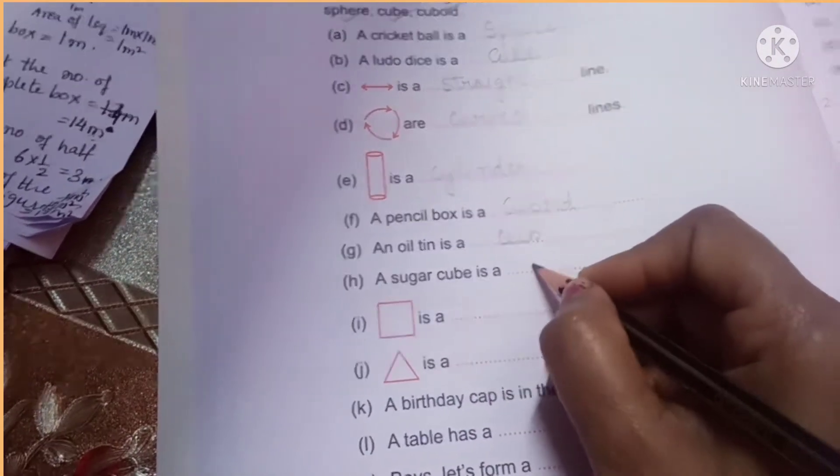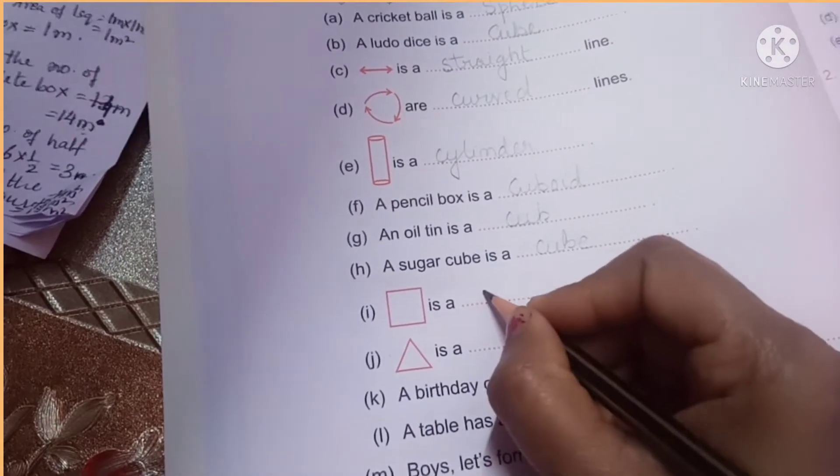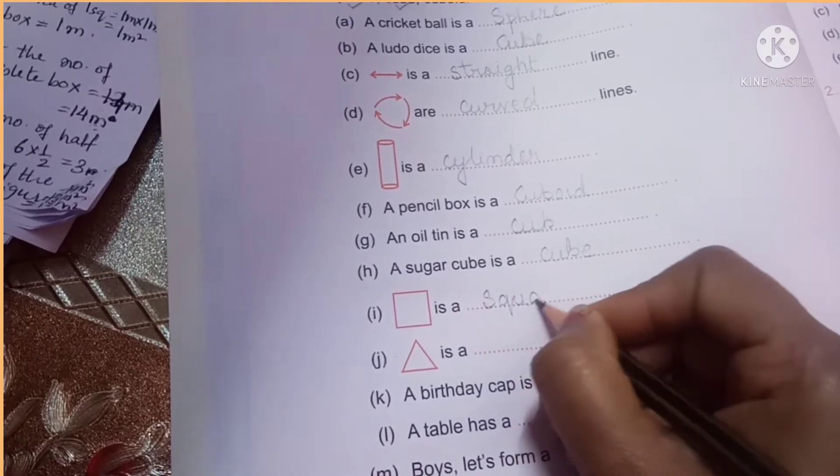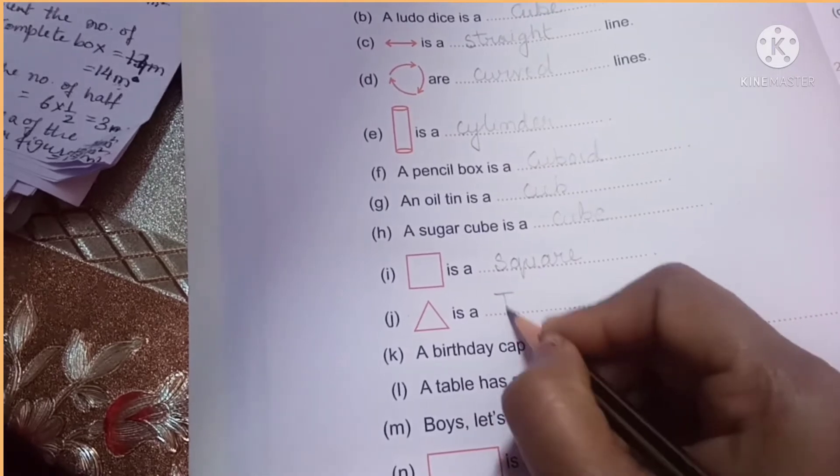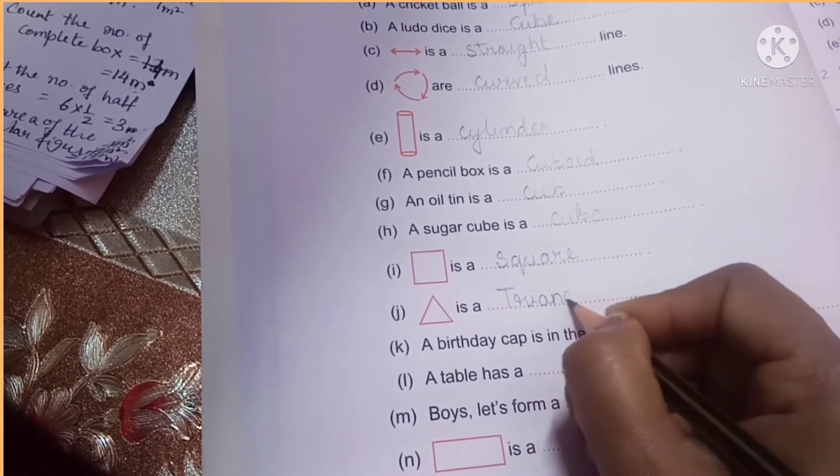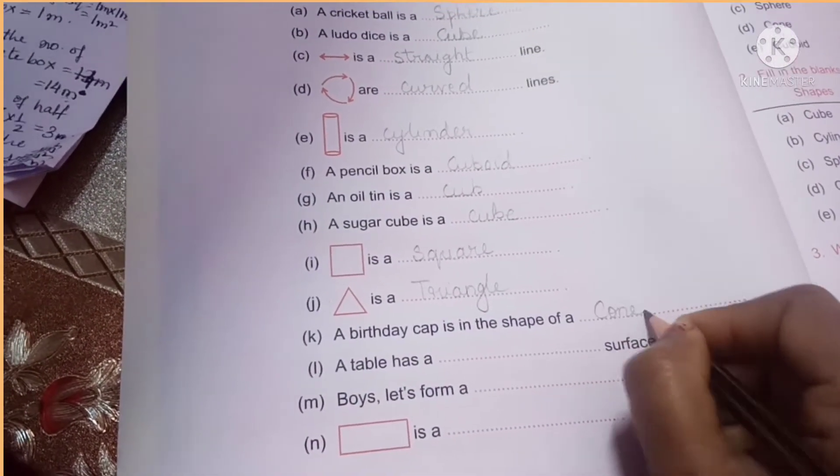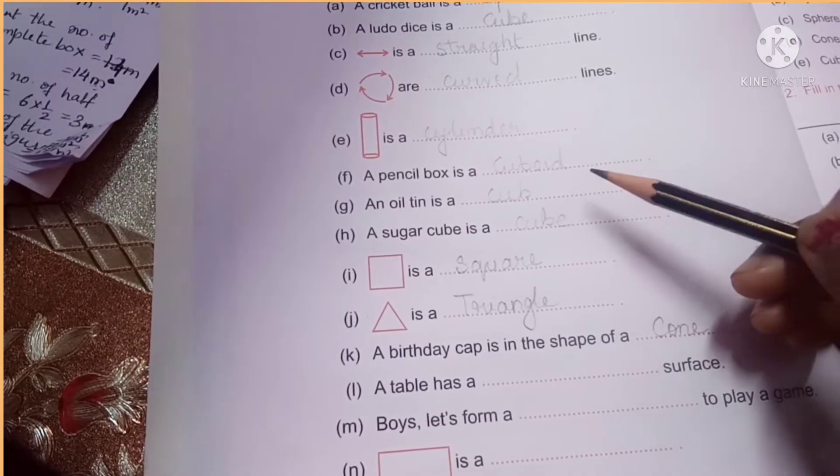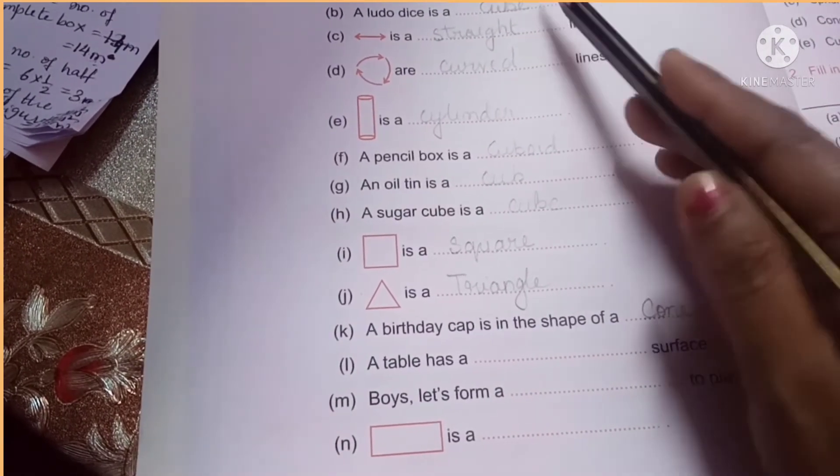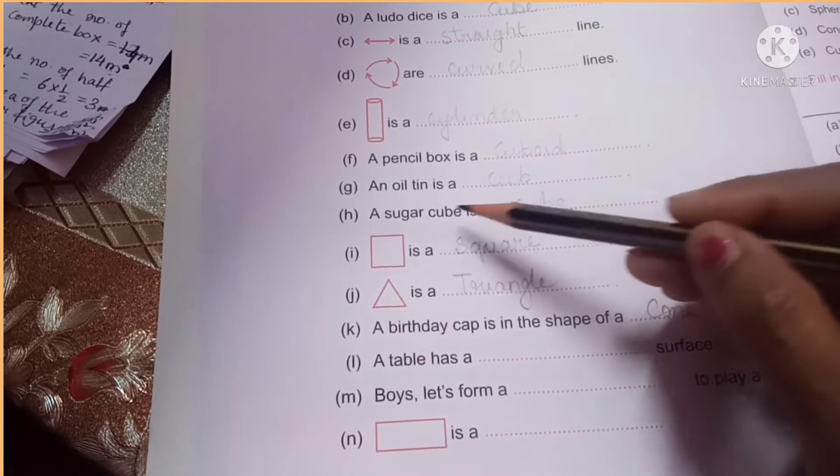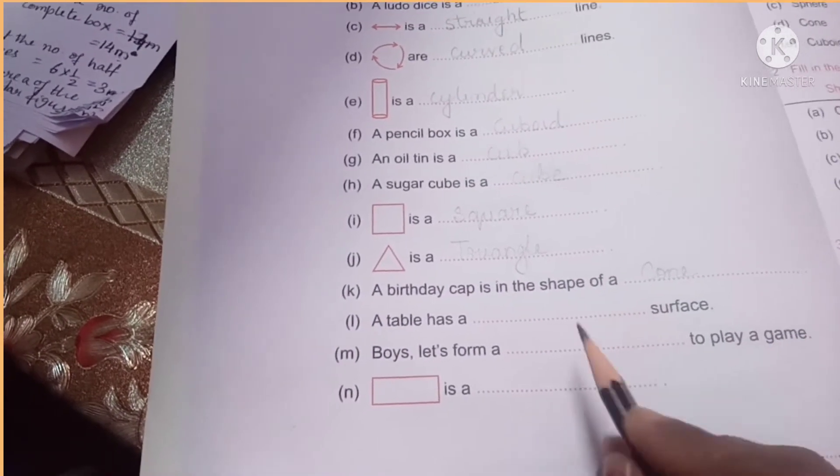So there are extra number of fill in the blanks. So we have to select the right option from here. Like one option can be used twice. Let's leave this one. A sugar cube is a cube shape. What is this? This is a square. S-Q-U-A-R-E. What is this? The shape is called a triangle. A birthday cap is in the shape of cone. Now, which word has come for two times? So far we have seen cube has come two times because a Ludo dice is a cube. Then, a sugar cube is also a cube.